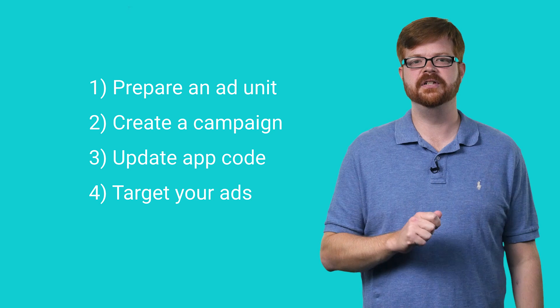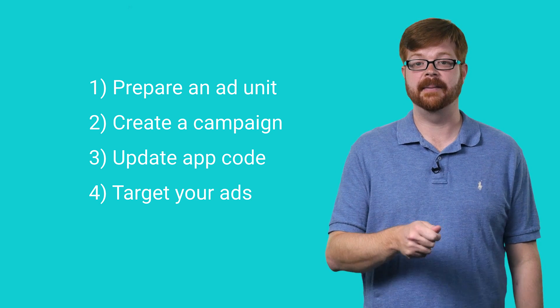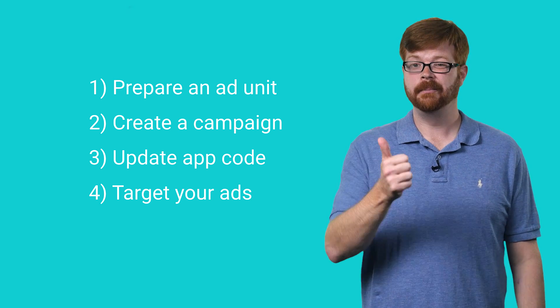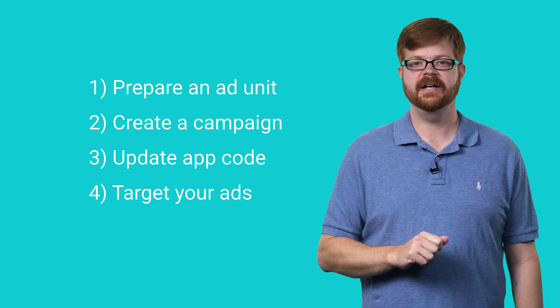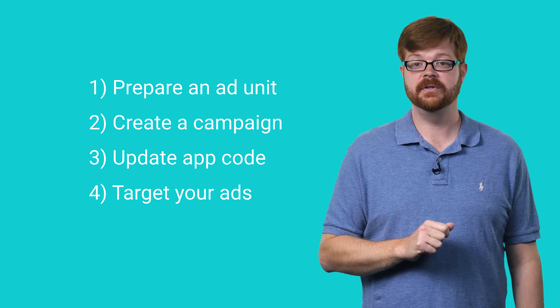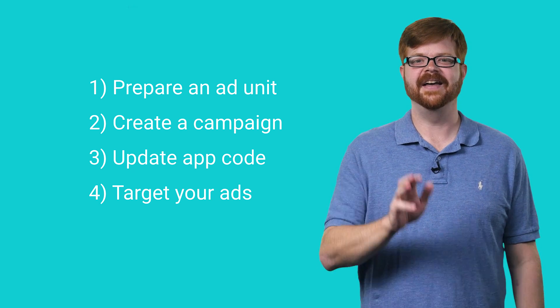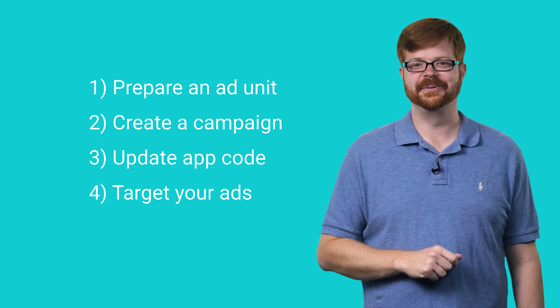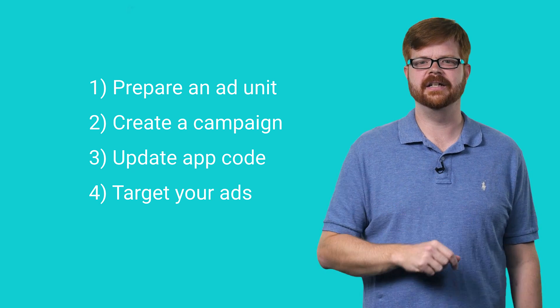So let's say you're an Android app developer and you've got an application in the Play Store with in-app products that users can purchase. You'd like to maximize the revenue you make from these products, and AdMob's in-app purchase house ads can help you do it. There are four things you need to do: prepare an ad unit, create the house ad campaign, update your app's code to show the ads, and then target them for maximum revenue.